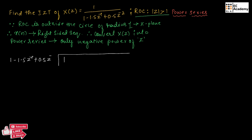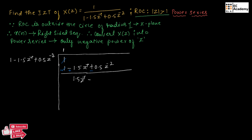Now let us divide the numerator by the denominator. Taking 1 times the denominator gives 1 minus 1.5 Z inverse plus 0.5 Z to the power of minus 2. If we subtract this value, applying the sign changes, we cancel out the leading 1 and are left with 1.5 Z inverse minus 0.5 Z to the power of minus 2.